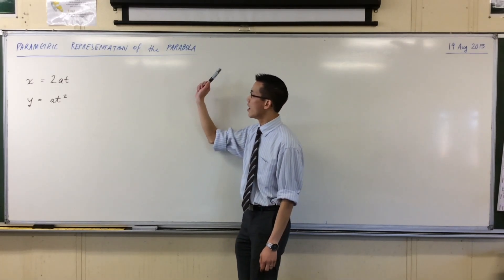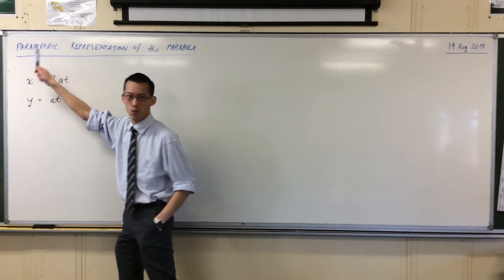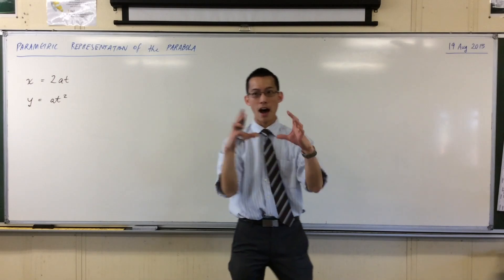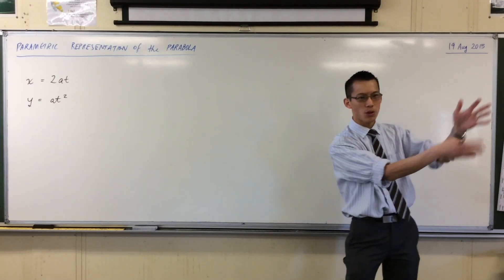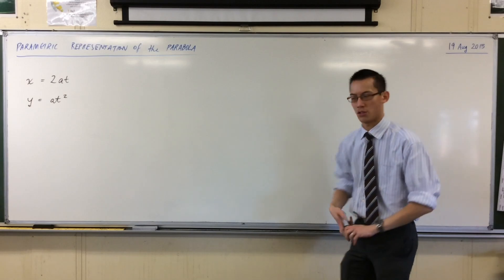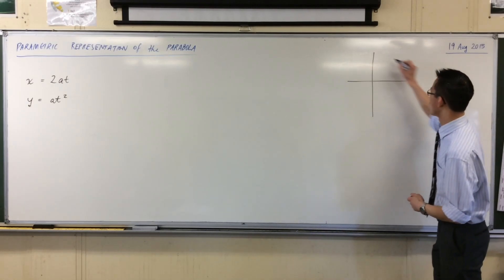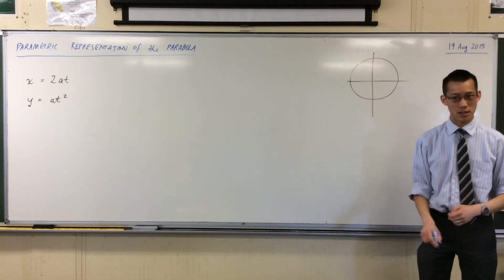We said you can introduce a parameter, a separate other variable, which is like a measurement beside all your other measurements, your x's and y's that you're used to. And the classic example that I gave you, which you're already familiar with, is the unit circle.